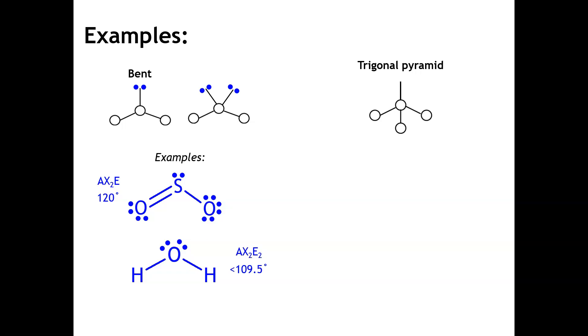For trigonal pyramid, notice this is going to be the AX3E shape. We have an unshared pair on that central atom, and I've got ammonia as your example. Even though we have four electron regions or four electron domains, we've got an unshared pair and three bonded atoms, we're going to expect the bond angle measure to be less than 109.5, in this case closer to 107. You're not expected to necessarily memorize that, but it's important for you to recognize that if you have unshared pairs of electrons, they're going to experience more repulsion.